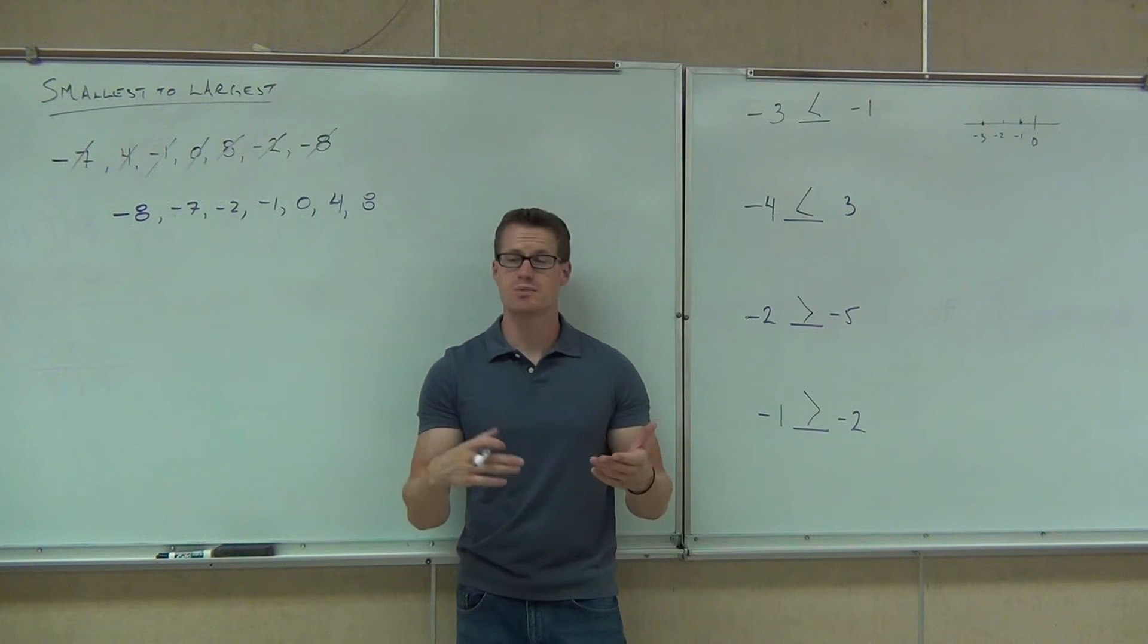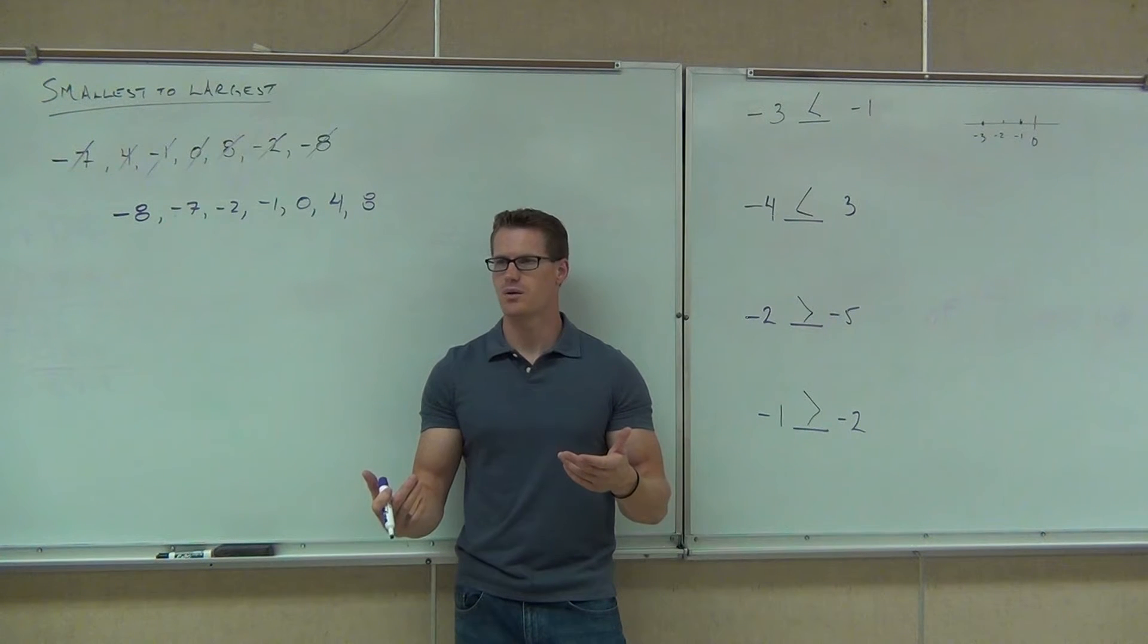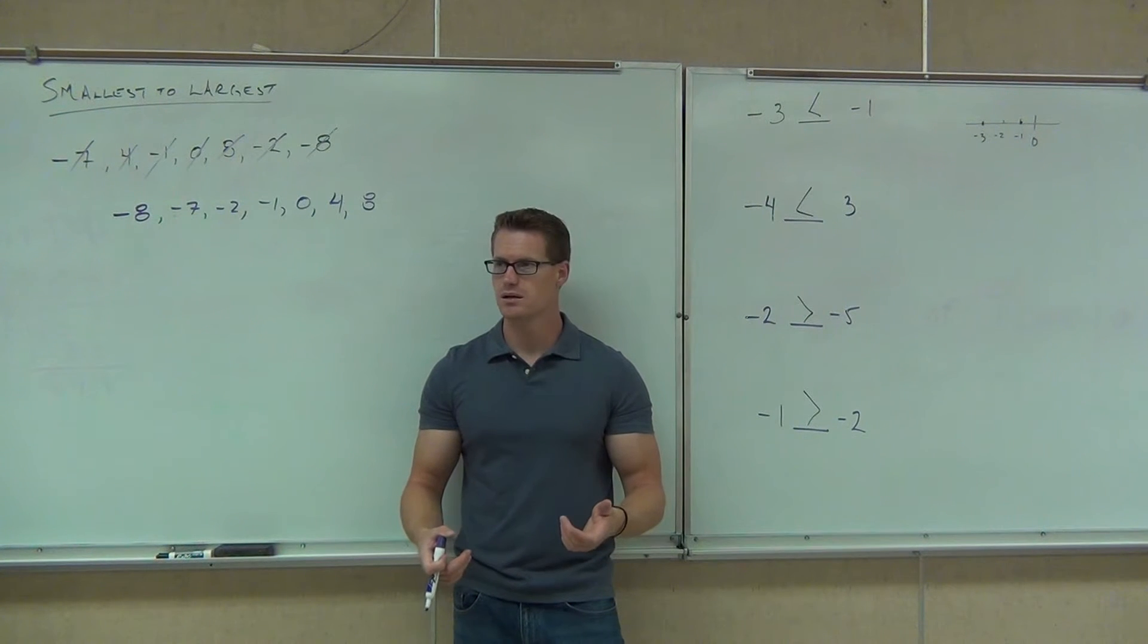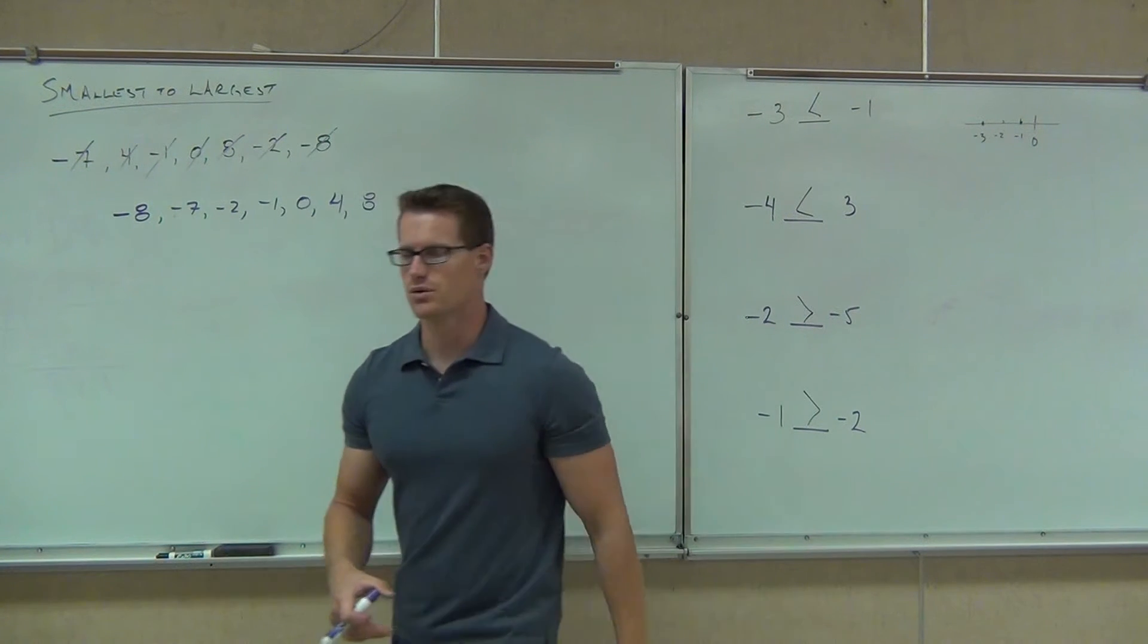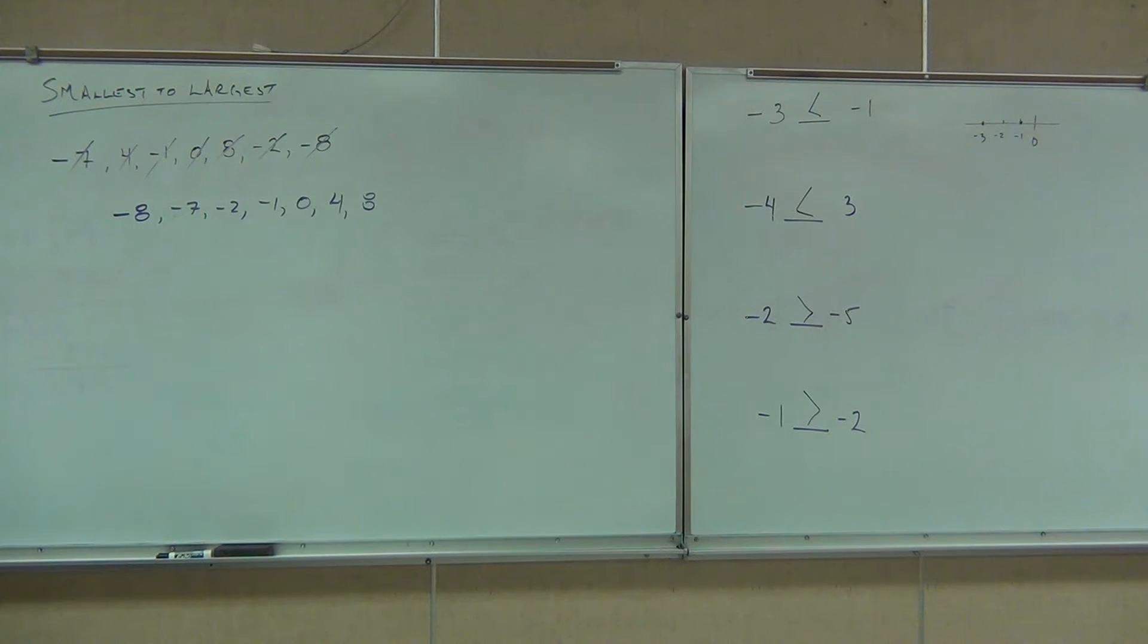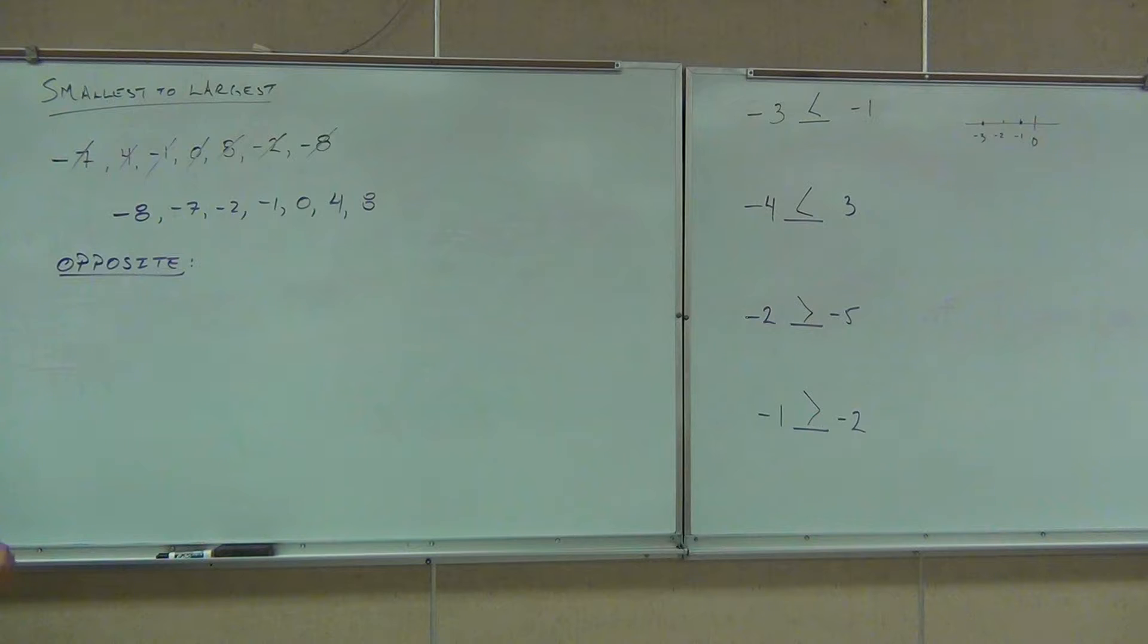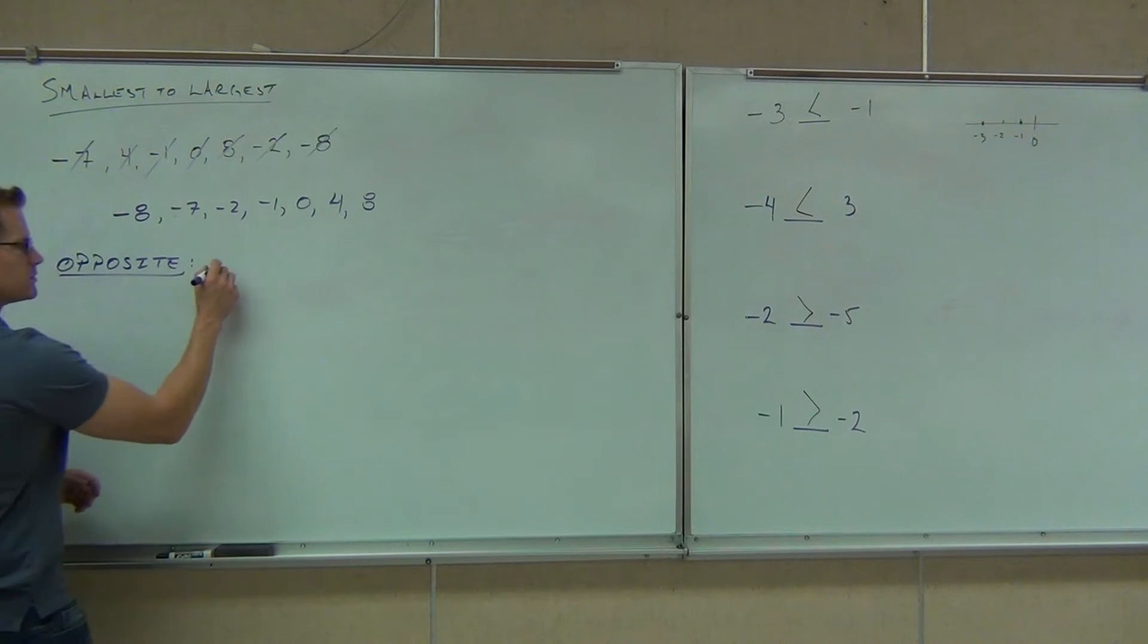Opposite means the same distance from zero, but on the other side of zero. So when you say opposite numbers, the opposite of negative three is three. And the opposite of ten would be negative ten. It just means the other side of zero.